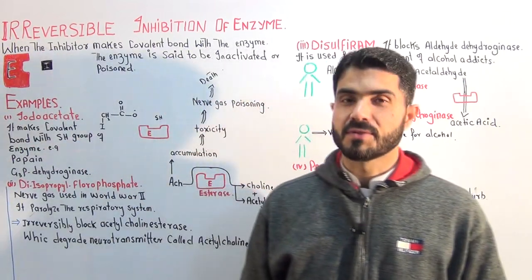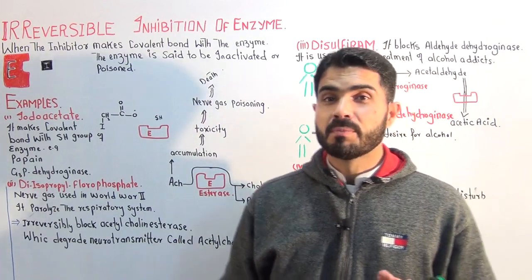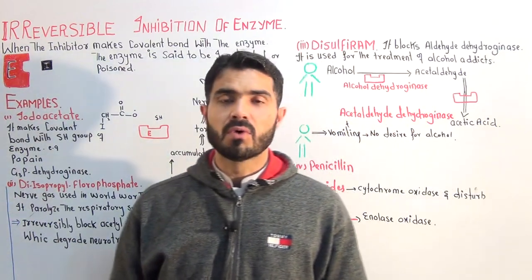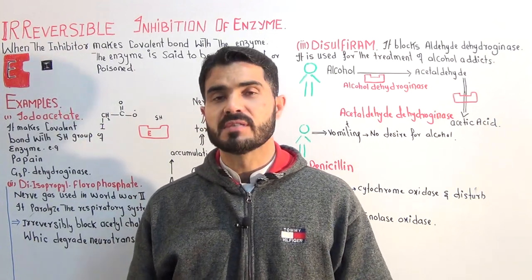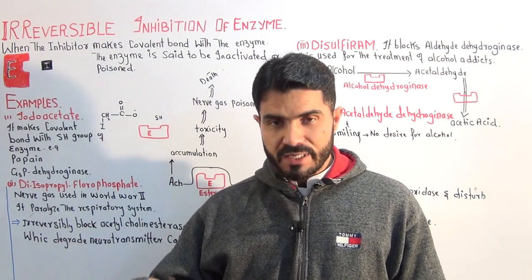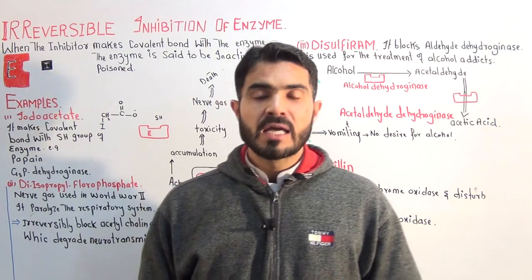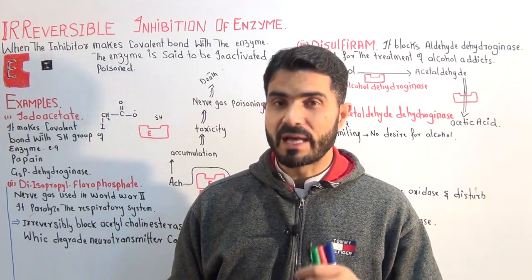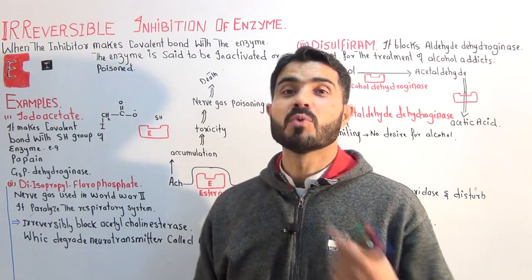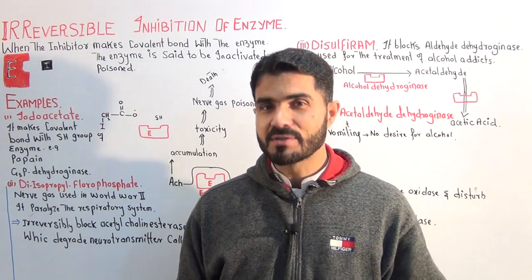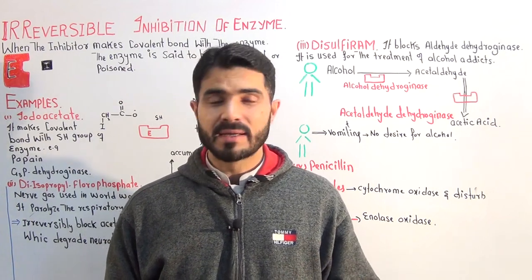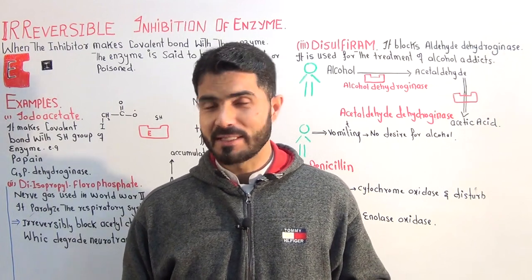Hi guys, welcome back. This is Dr. Hadi. Today's topic is from biochemistry: irreversible enzyme inhibition. The topic we started earlier was enzyme inhibition. Inside this topic, we discussed reversible enzyme inhibition in detail. Today we will discuss irreversible enzyme inhibition. We will provide some definitions, examples, and the clinical importance — including how to treat alcohol addicts who want to get rid of alcohol.